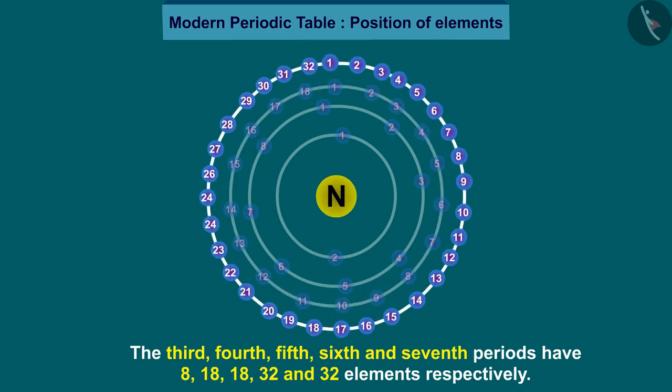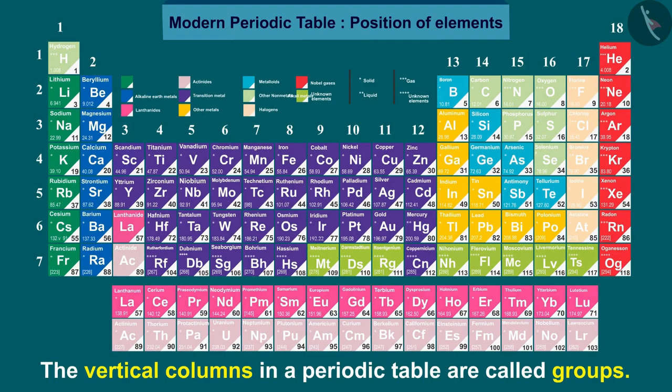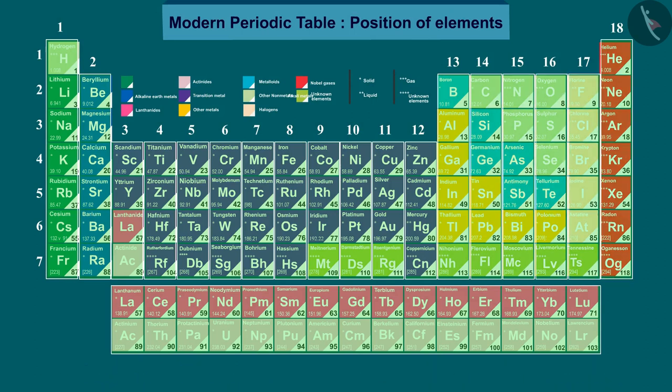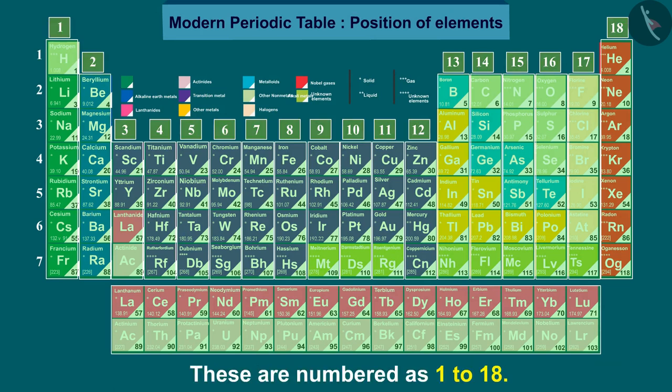The vertical columns in a periodic table are called groups. There are 18 groups in the long form of periodic table. These are numbered as 1 to 18.